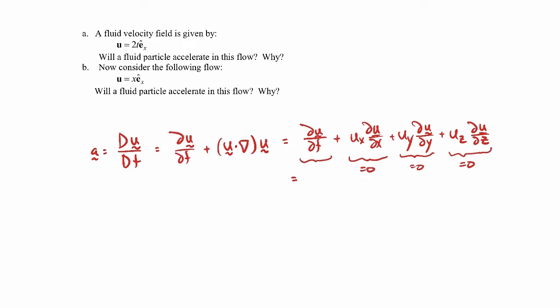The time derivative of the velocity will be just 2 in the e_x hat direction. So our acceleration in this velocity field is just equal to 2e_x hat. So it's a constant acceleration in the x direction.